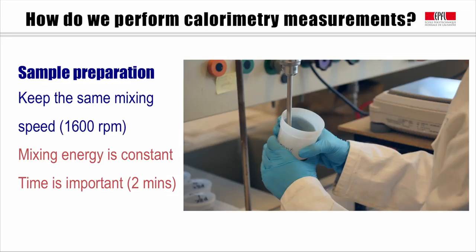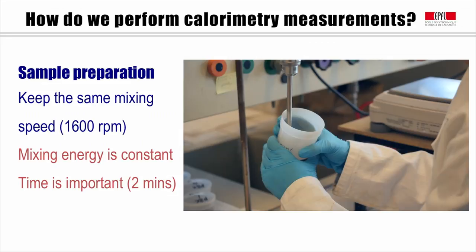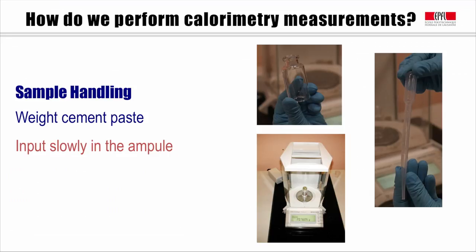After the cement paste is ready, we will need to put a certain amount of paste inside of the ampoule. The weight of the paste in the ampoule is important in order to later normalize the total heat release. In this step, we will need to prepare a glass ampoule, a pipette, and a balance.